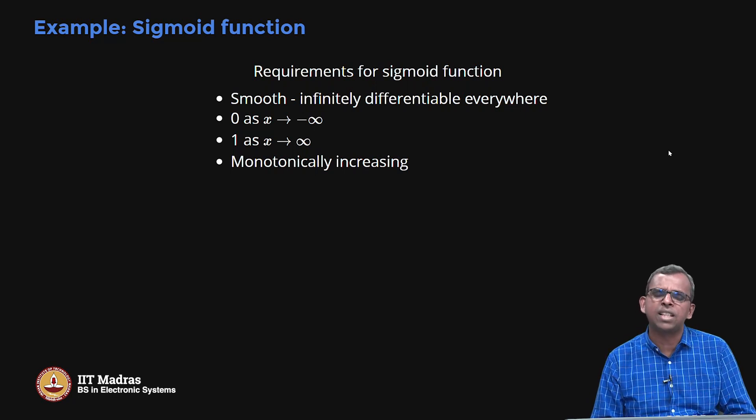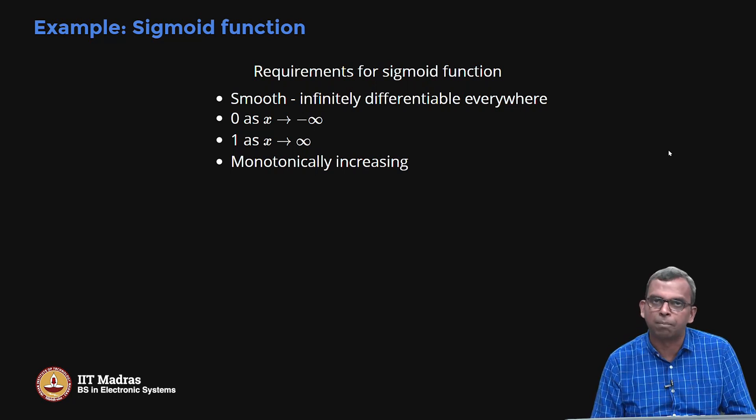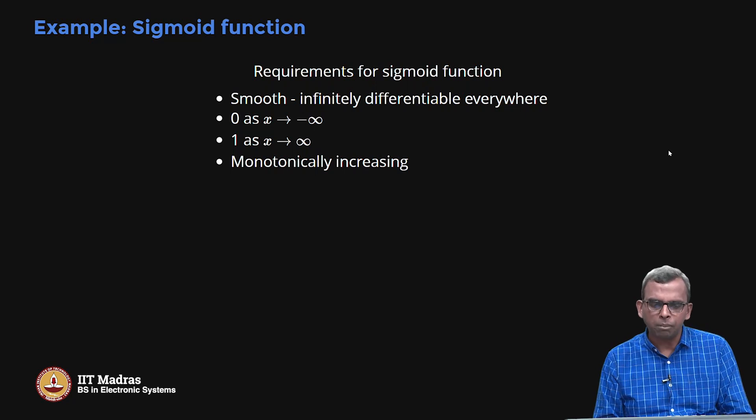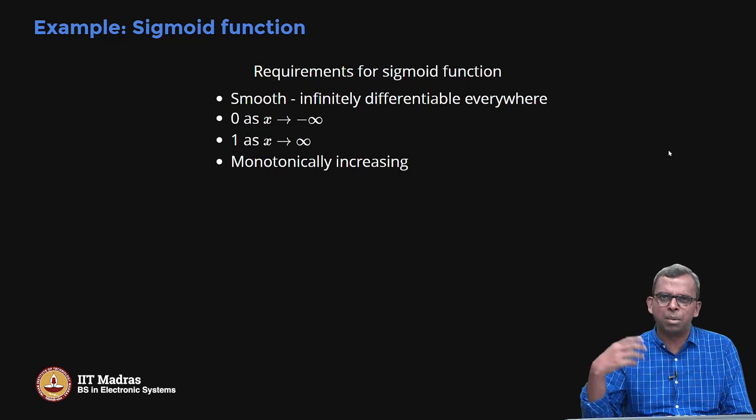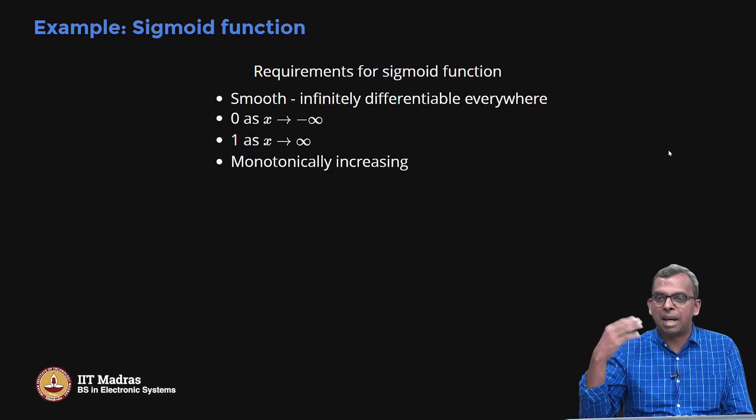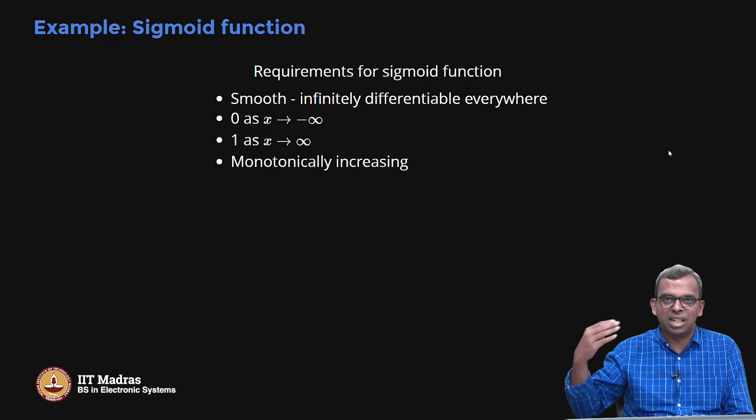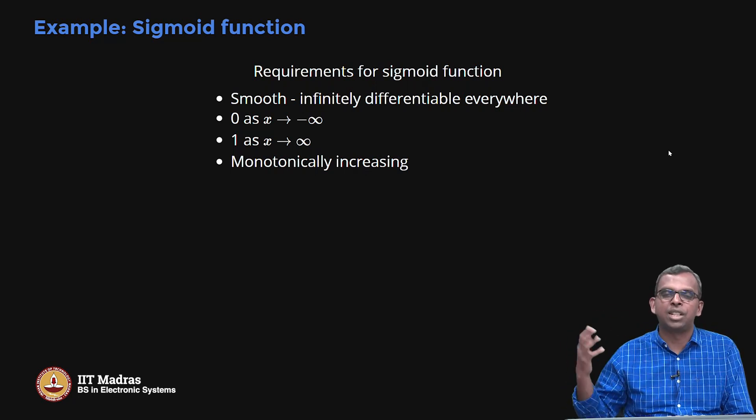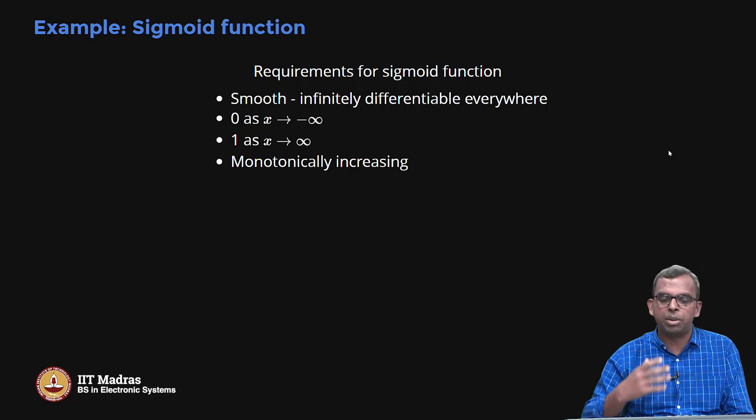First thing is we want it to be very smooth, infinitely differentiable everywhere. So there is a good reason for it. You will see why, because it is used in some optimization algorithms. You may remember maximization, minimization involves differentiation and all that and you want the differentiation to exist, derivatives to exist. So you want it to be very smooth.